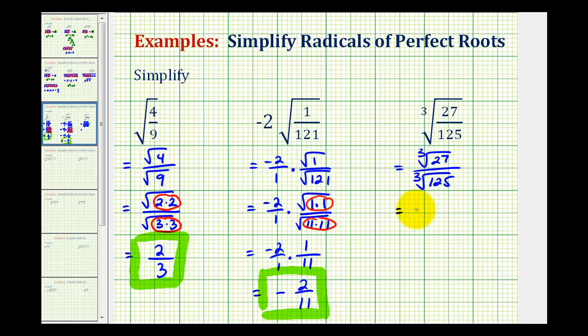Again, to show this, we could rewrite the cube root of 27 as the cube root of 3 times 3 times 3, and the cube root of 125 as the cube root of 5 times 5 times 5. Again, because we have three equal factors, this is a perfect cube, and so is this.